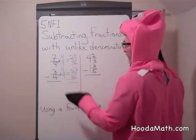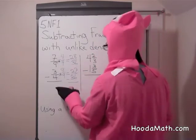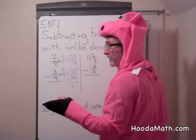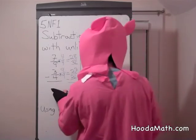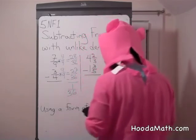And we subtract. 28 minus 27 is 1. We subtract the numerators, so we have 1 thirty-sixth.